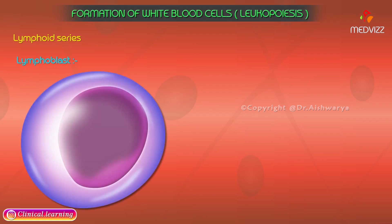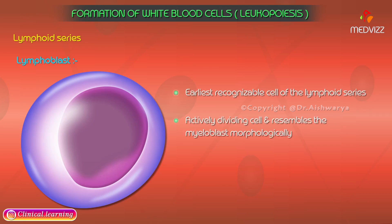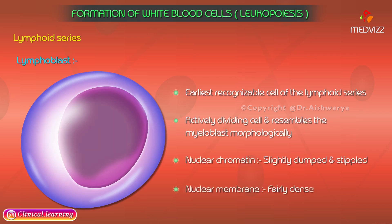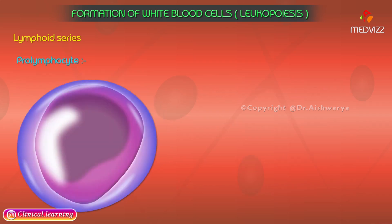The maturation stages of the lymphoid series begin with the lymphoblast, the earliest recognizable cell of the lymphoid series. It is an actively dividing cell that resembles the myeloblast morphologically, except that its nuclear chromatin is slightly clumped and stippled compared to the fine meshwork in the myeloblast, and its nuclear membrane is fairly dense compared to the very fine membrane of the myeloblast.